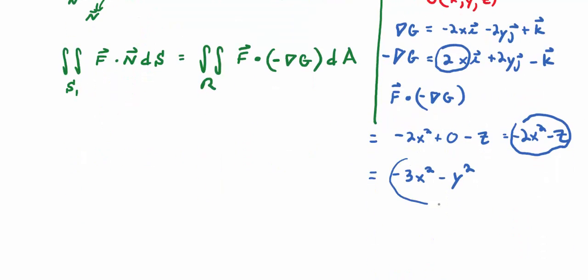But if we're going to turn this into a double integral with respect to X and Y, we need to substitute what Z is equal to to get everything in terms of X and Y. So X squared plus Y squared goes in for Z. When we do that, we end up with negative 3X squared minus Y squared.